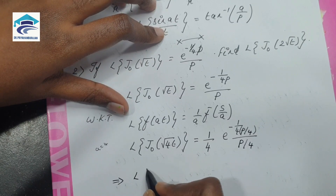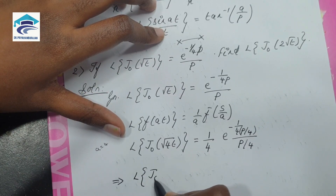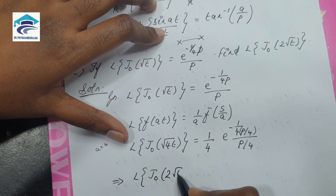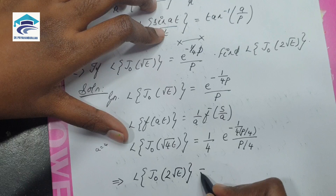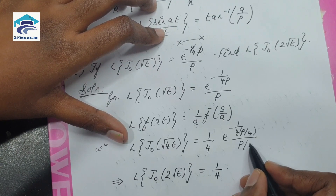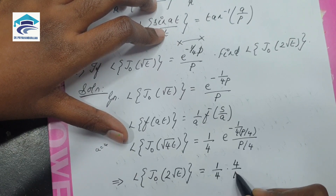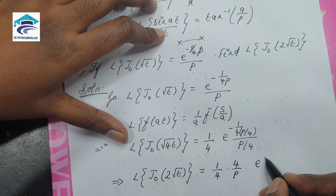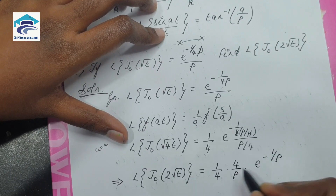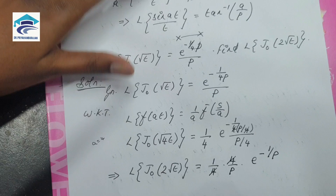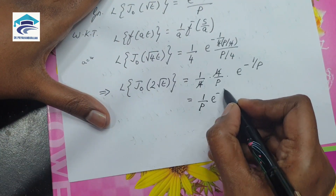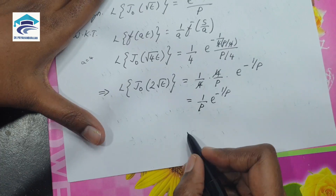This implies L of J₀(2√t) is equal to (1/4) times (4/p) times e to the power minus 4/(4p). The 4s cancel, giving (1/p) times e to the power minus 1/p. So this can be written as (1/p) e to the power minus 1/p, and this is our answer.